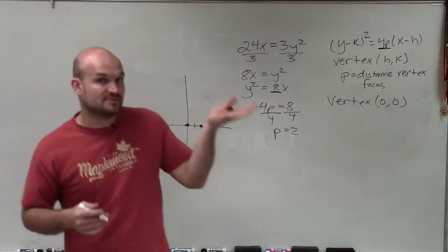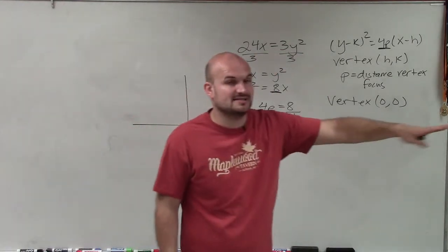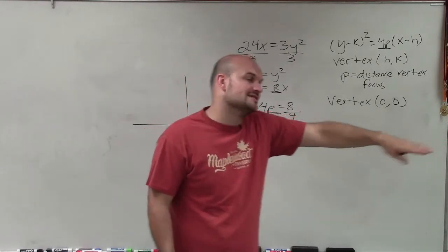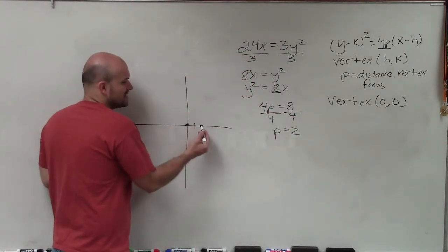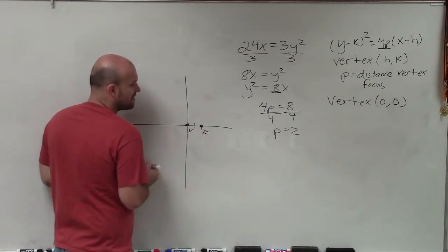Now, why am I not going up 2? Because remember, we identified that since y was squared, the axis of symmetry is going to be horizontal. The axis of symmetry is where my vertex and focus lie. So there is my vertex, and there is my focus.